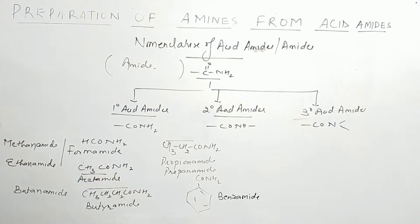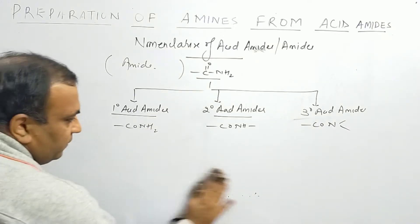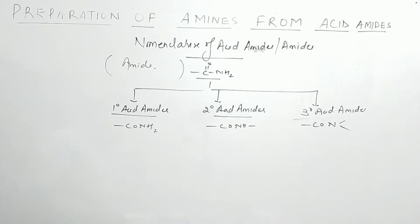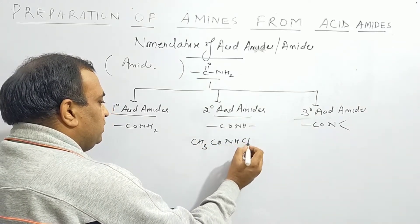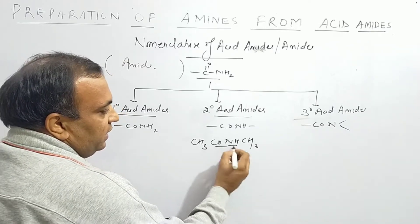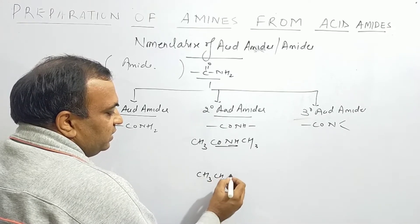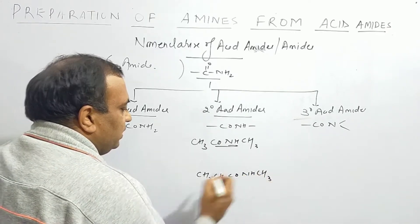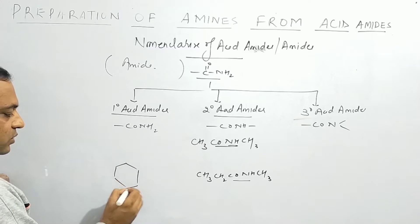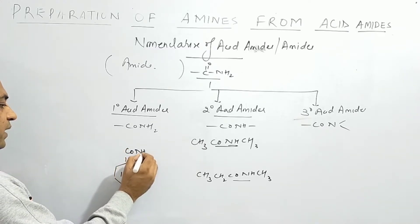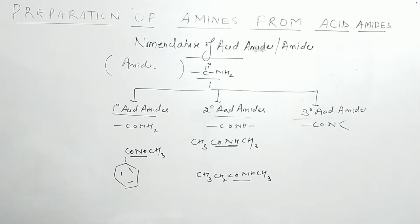Now we will shift to Secondary Acid Amide. CH3-CO-NH-CH3 — this has an NH group, so it means secondary acid amide. Another example: CH3-CH2-CO-NH-CH3 is also a secondary acid amide, and similarly any structure with the CoNH functional group.